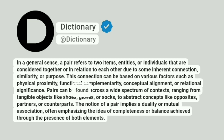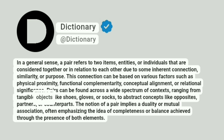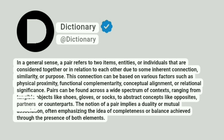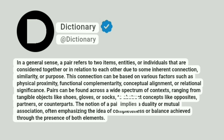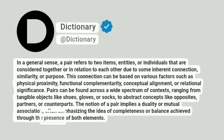Pairs can be found across a wide spectrum of contexts, ranging from tangible objects like shoes, gloves, or socks, to abstract concepts like opposites, partners, or counterparts. The notion of a pair implies a duality or mutual association, often emphasizing the idea of completeness or balance achieved through the presence of both elements.